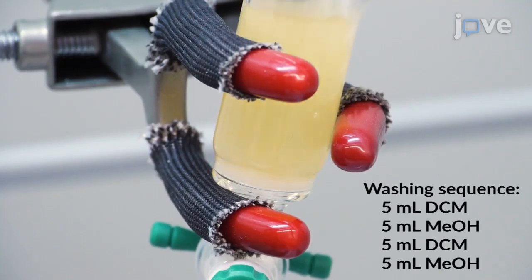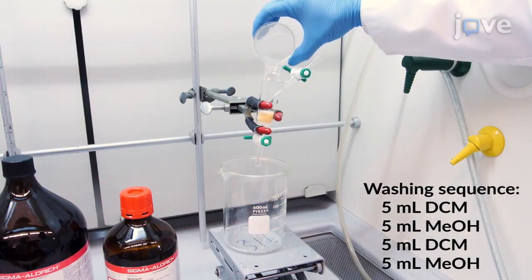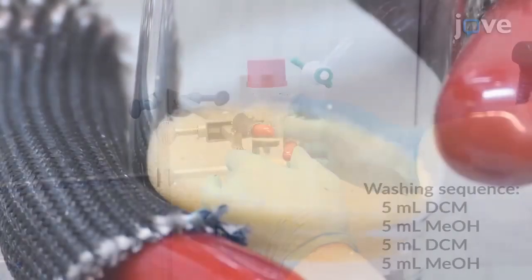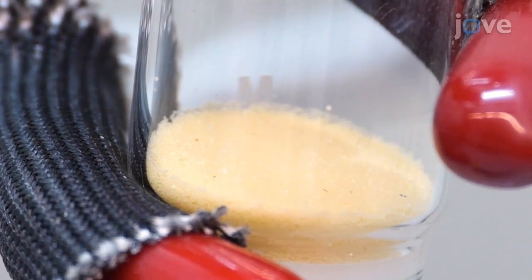After that, wash the resin 4 times, alternating between 5 milliliters of dichloromethane to swell the resin and 5 milliliters of methanol to contract the resin. Then thoroughly dry the resin with compressed air, which usually takes about 30 minutes.